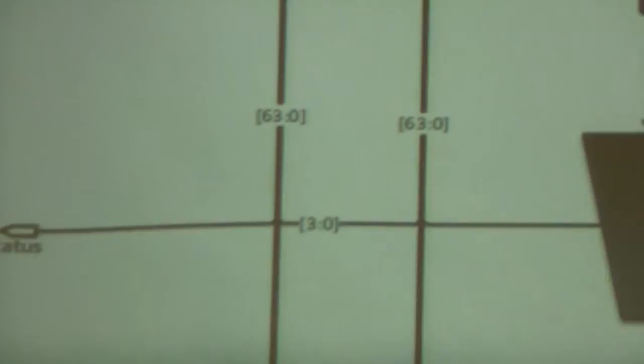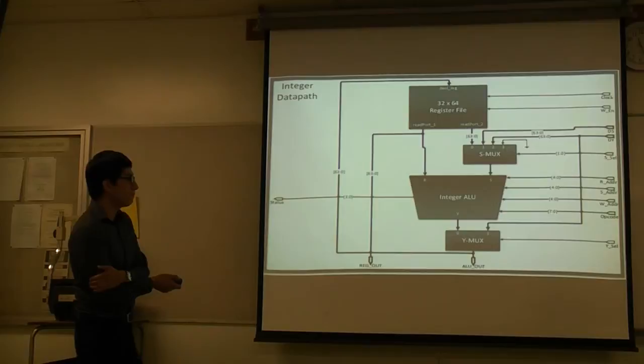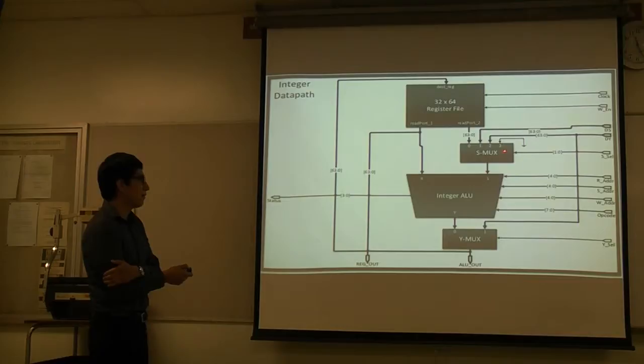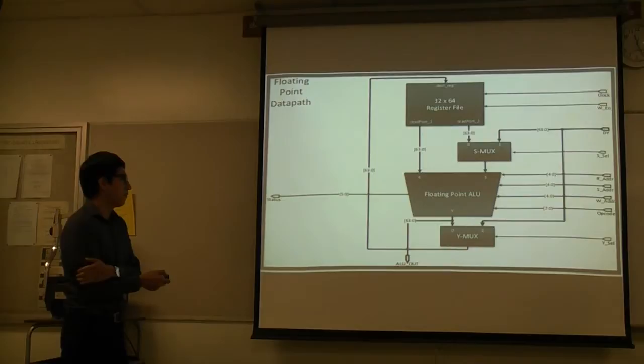Here's our integer data path, it's very similar to the baseline. The only difference would be that we added some more inputs to implement all the baseline instructions. And the same thing goes for our floating point data path. We added inputs to be able to do all of the instructions.